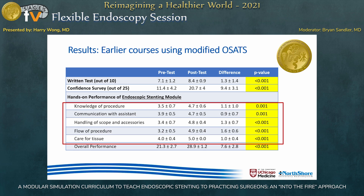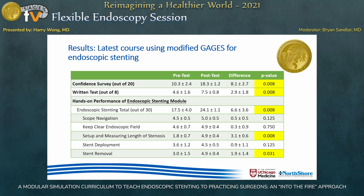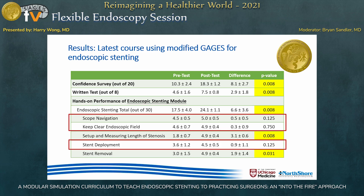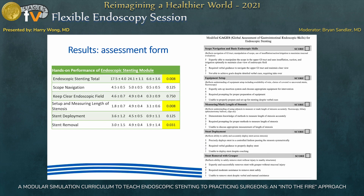More importantly, we saw significant improvement in hands-on technical skill in endoscopic stenting in each single component of the modified OSATS. In our most recent course using the specific modified GAGES for endoscopic stenting, we saw significant improvement in the total score for endoscopic stenting, as well as the setup and measuring of length of stenosis and stent removal. We did not see significant improvement in scope navigation, clear endoscopic field, or stent deployment.